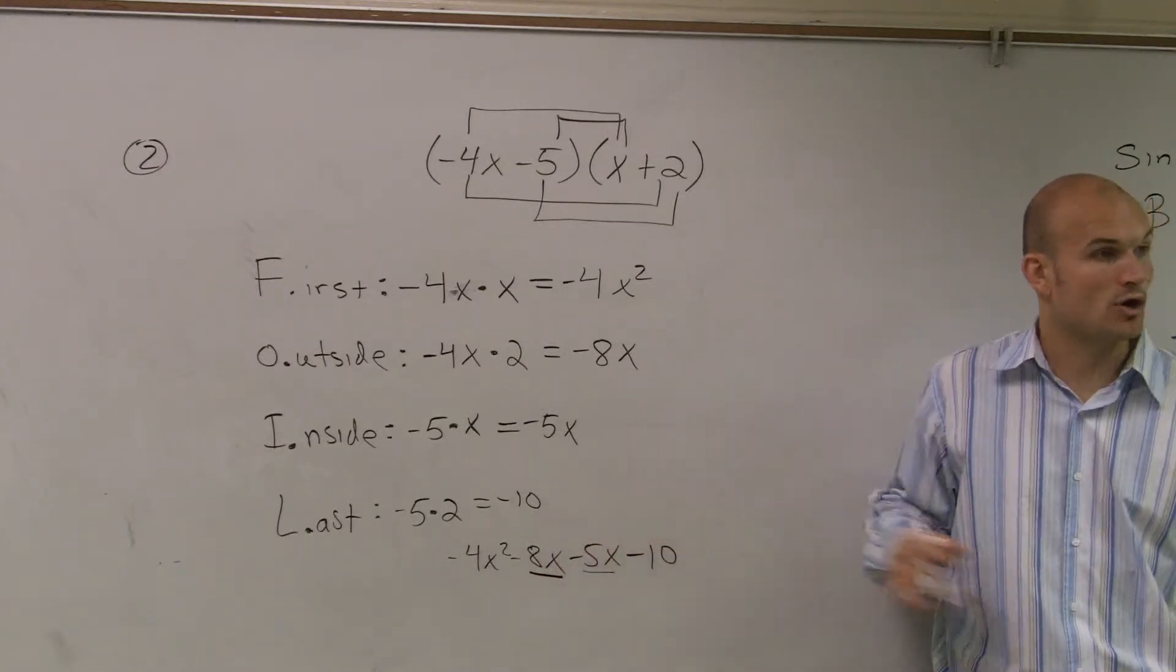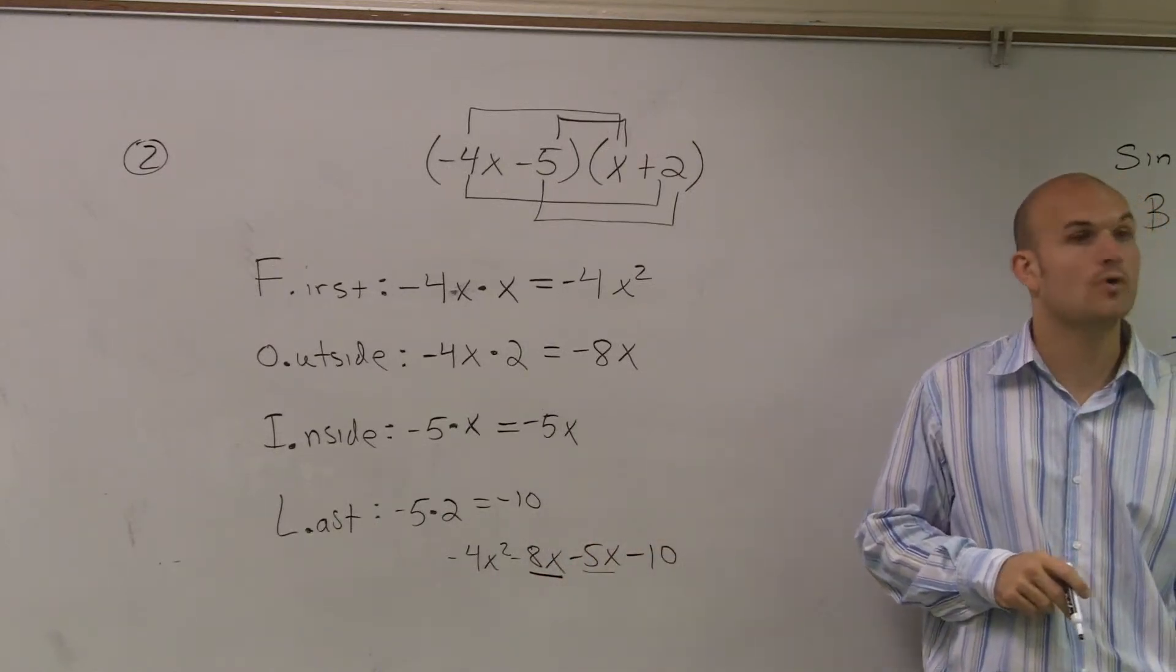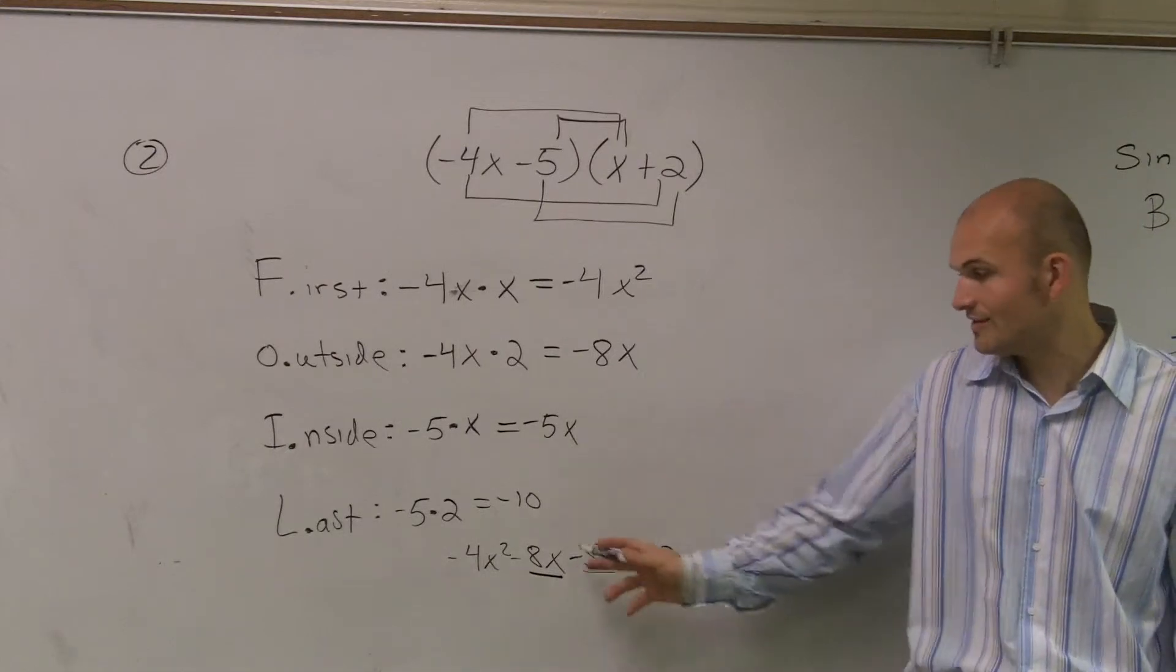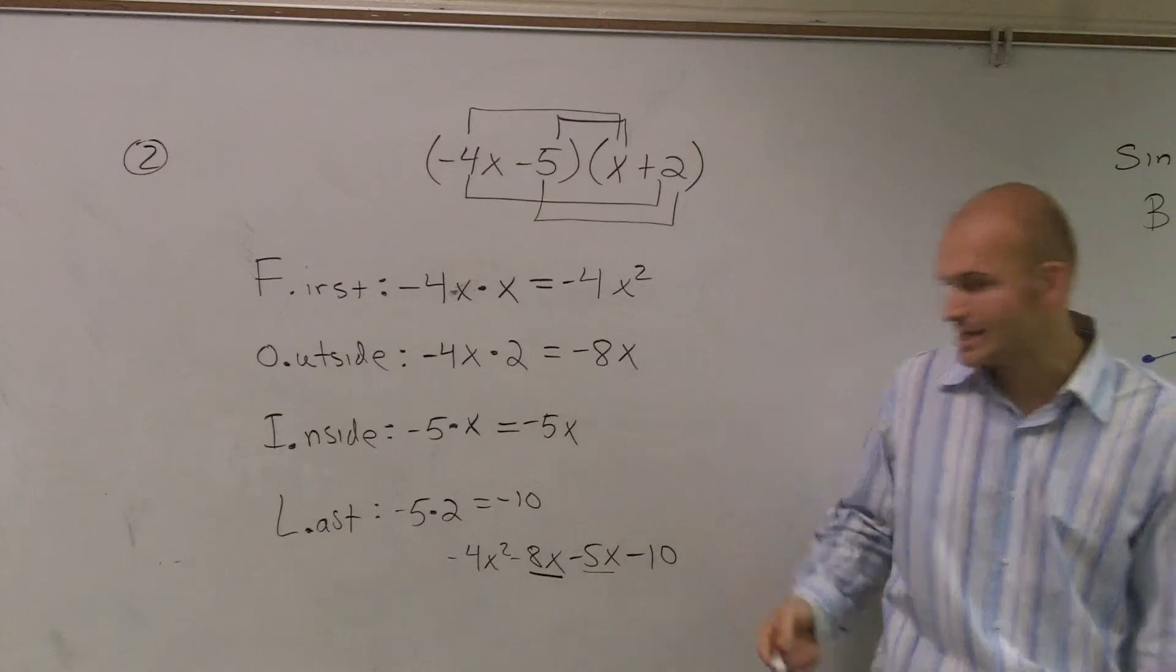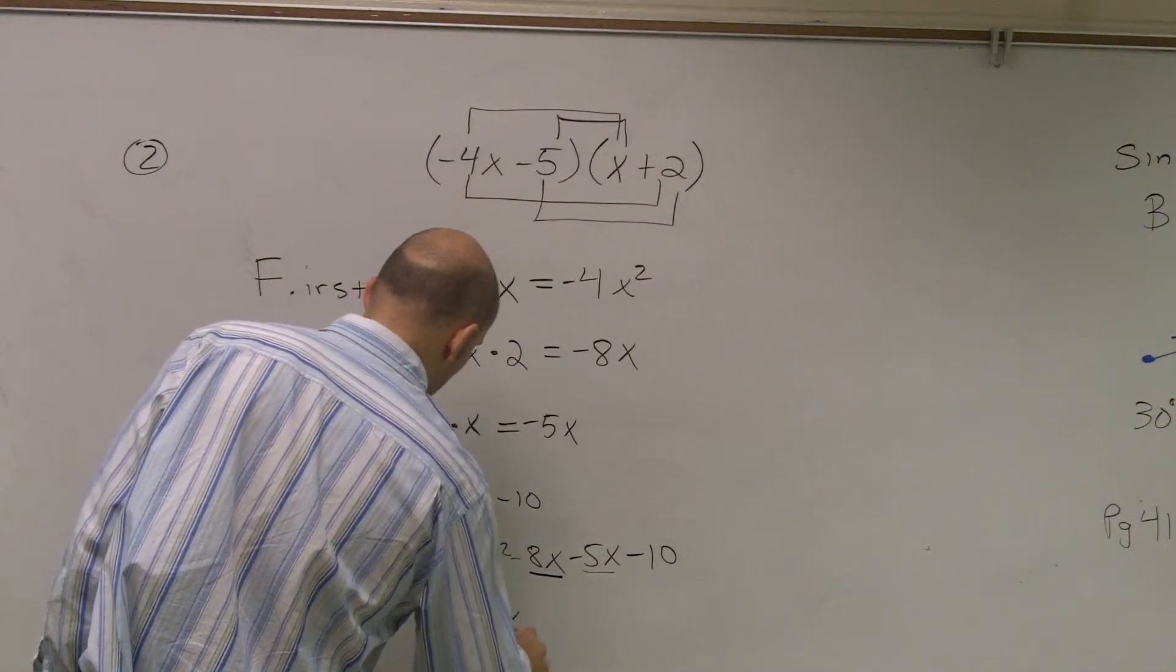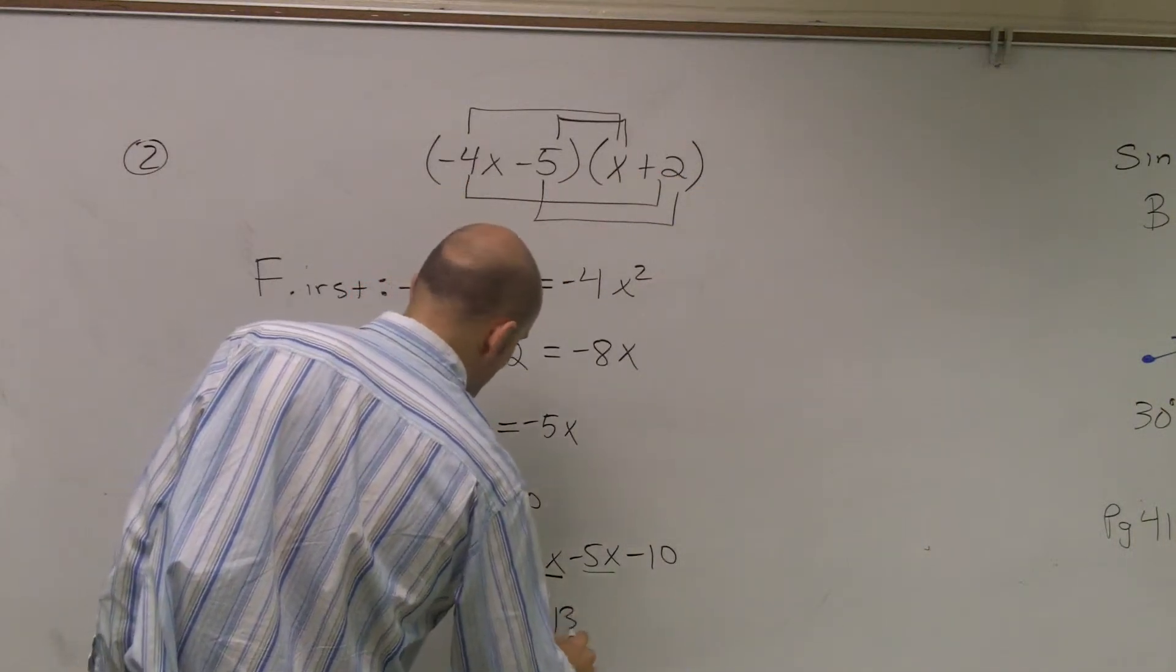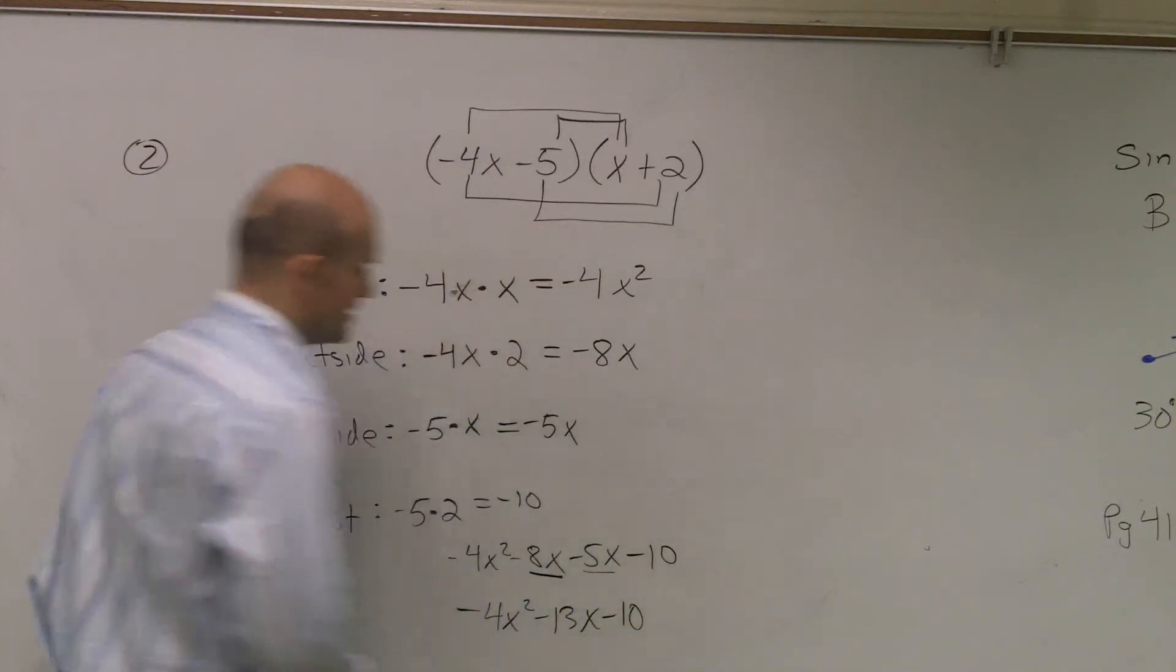If I owe $8 and I borrow five more, I now owe $13. So negative 8x minus 5x is negative 13x. And then the 10 I can't simplify with anything else. So this final answer is negative 4x² minus 13x minus 10.